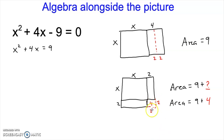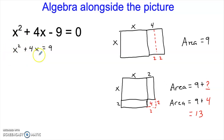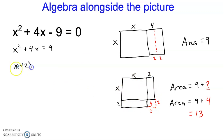We now have an area that's 9 plus 4, which is 13. But that's actually a square. So we started off with a rectangle and we had an area of 9. We've turned that into a square with an area of 13. That means that x plus 2 has to be the square root of 13. Now let me take you over to the algebra because there's another connection here I'd like you to make. The left-hand side of this equation is the picture itself — here's the square plus the 4x rectangle. The right-hand side is the area of the shape, which was 9 to begin with.